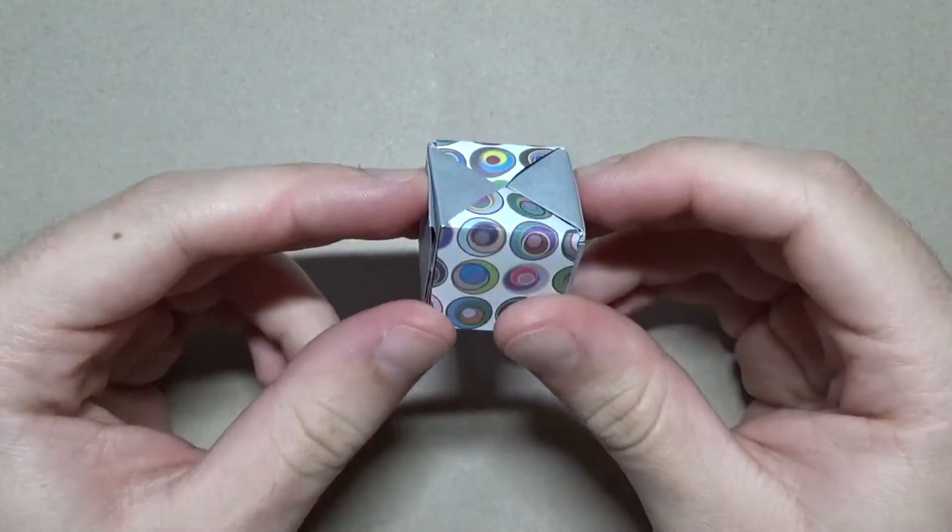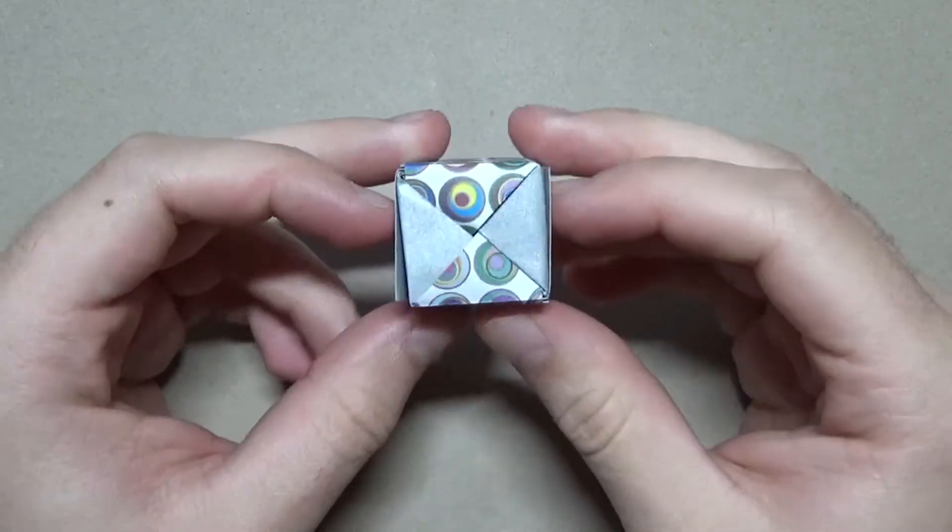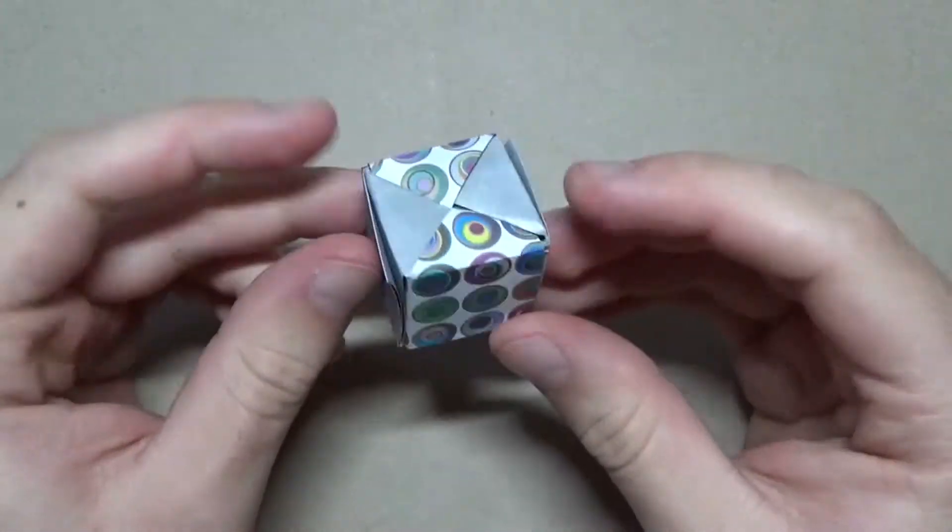So in this video, I'm going to demo this really cool origami iso area flasher designed by Jeremy Schafer. Check it out.